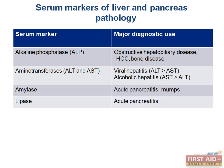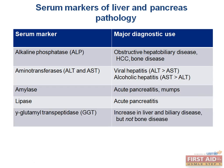Amylase and lipase are both markers for acute pancreatitis, and amylase is also elevated in mumps. The amylase in the latter is secreted by the salivary glands, as opposed to pancreatic amylase. GGT, or gamma-glutamyl transpeptidase, is typically ordered to confirm heavy alcohol consumption, though it can be elevated in various conditions. However, it is not elevated in bone disease, unlike ALP.